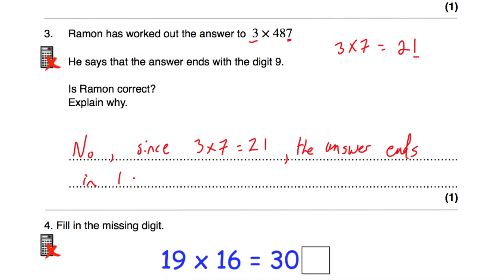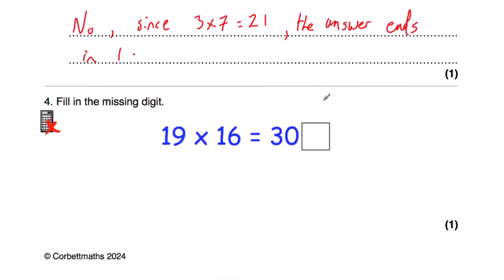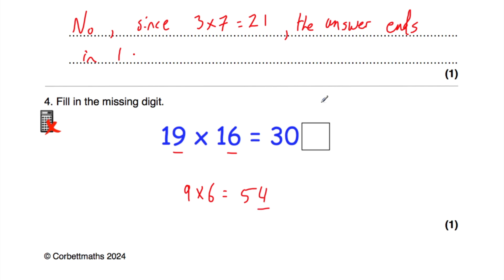Question number four: we've got 19 multiplied by 16 is equal to 300 and something. We need to figure out the missing end digit. Nine times 6 is equal to 54, which ends in a 4. So our answer needs to end in a 4, giving us 304. The missing digit was a 4.